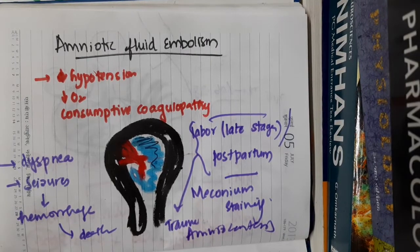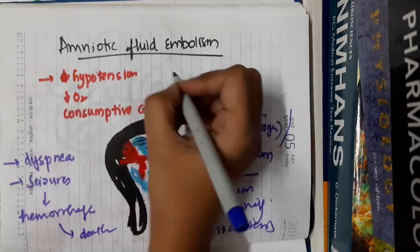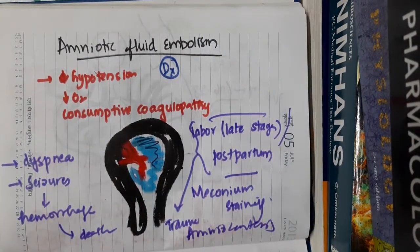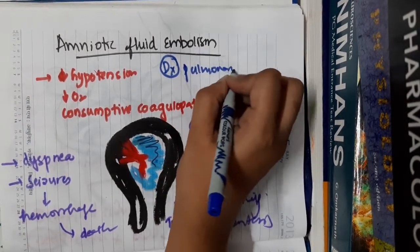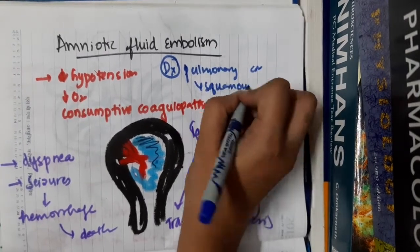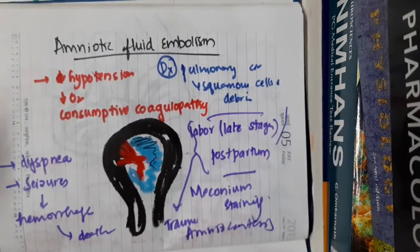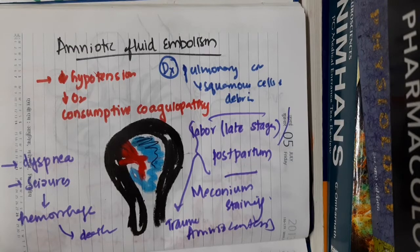Regarding diagnosis: in the cardiopulmonary circulation, especially in the pulmonary circulation, you will see the presence of squamous cells and other debris. Squamous cells and debris seen in the pulmonary circulation is one pathognomonic feature of amniotic fluid embolism.